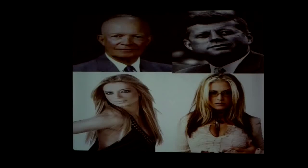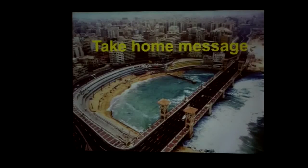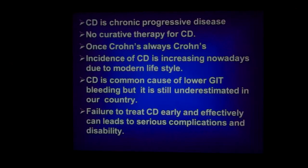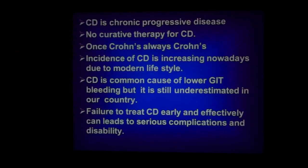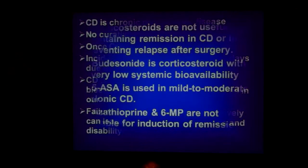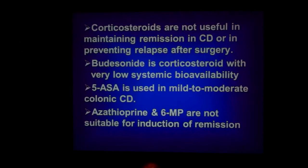In closing: Crohn's disease is a chronic progressive disease. Once Crohn's, always Crohn's. The incidence is increasing due to modern lifestyle. Crohn's is a common cause of lower GI bleeding but is still underestimated worldwide. Failure to treat Crohn's early and effectively can lead to serious complications and disability. Corticosteroids are not useful in maintaining remission or preventing relapse after surgery.